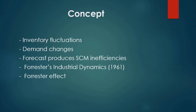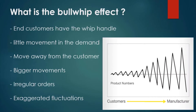The Bullwhip Effect is a distortion channel phenomenon in which forecast errors produce supply chain inefficiencies. It refers to increasing swings in inventory in response to shifts in customer demand as you move further up the supply chain. The Bullwhip Effect can be explained as a phenomenon detected in the supply chain where orders sent to the manufacturer and supplier create larger variance than the sales to the end customer. These irregular orders in the lower part of the supply chain develop into more pronounced decline higher up in the supply chain.